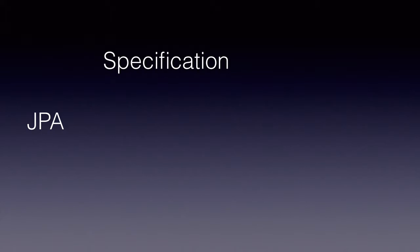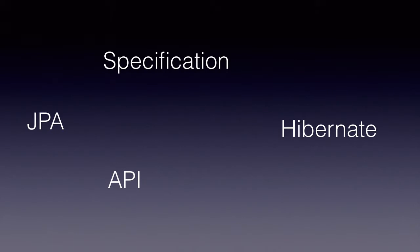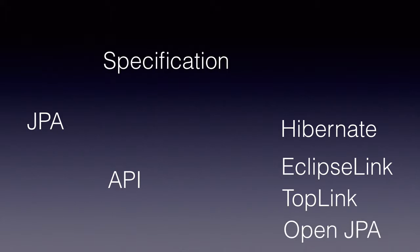JPA stands for Java Persistence API. It is a standard from Oracle to do object relational mapping — that is, to map our objects to database table rows and vice versa. As part of any standard, Oracle provides a specification and an API. The specification is for JPA providers or vendors like Hibernate, Eclipse Link, Toplink, and Apache OpenJPA.